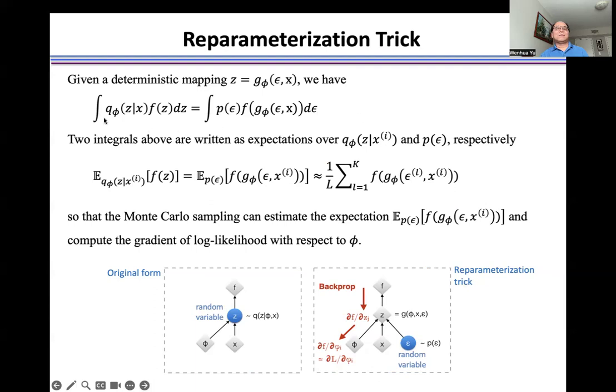And then we use Monte Carlo approximation to convert these two integrals to the expectations. And then we use Monte Carlo sampling to calculate this expectation and then calculate the gradient of the likelihood with respect to phi.